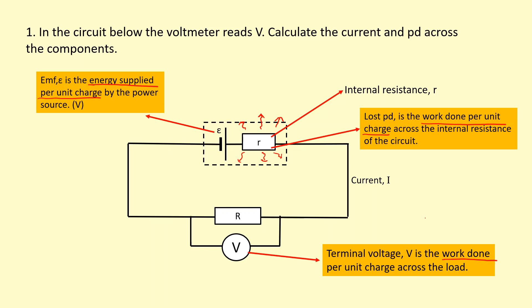The remainder of energy is what we call the terminal voltage — that's the work done per unit charge across the load. Now, load is anything that's connected to the power supply, so it doesn't have to be just one resistor. It could be many things, a whole bunch of resistors, and that's represented using capital R.